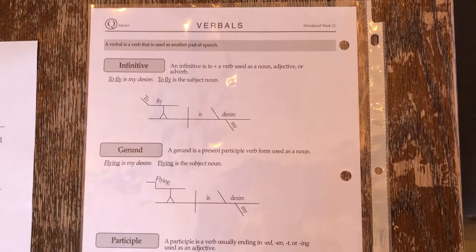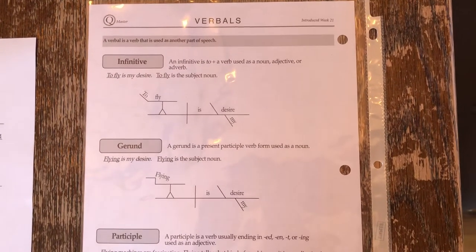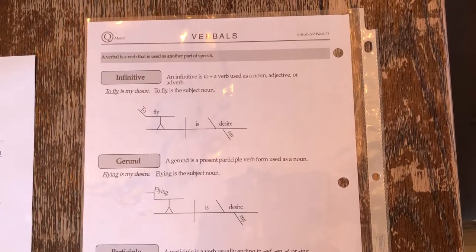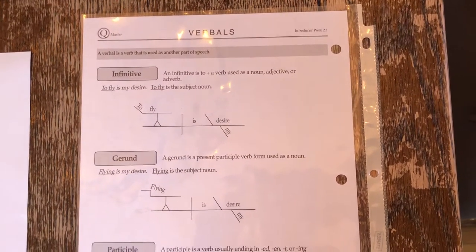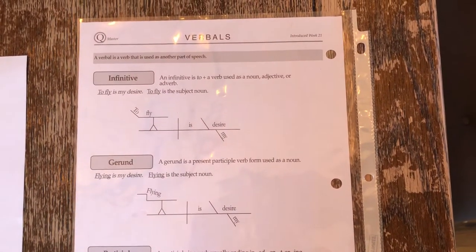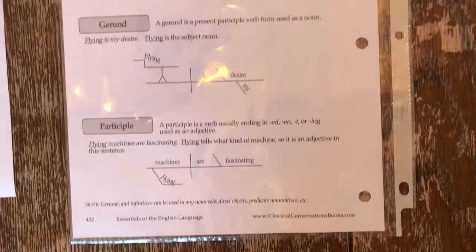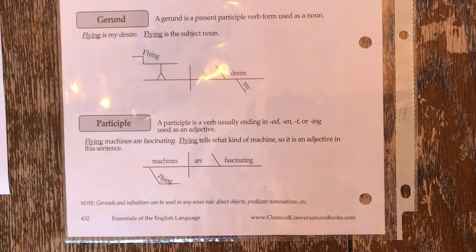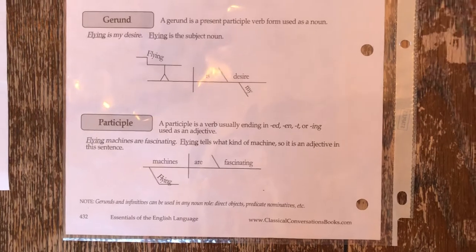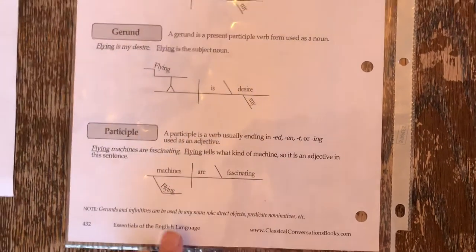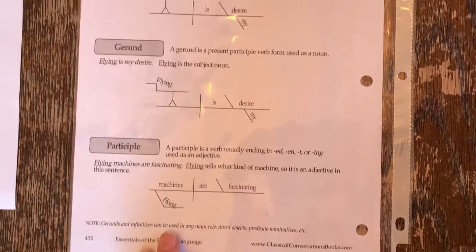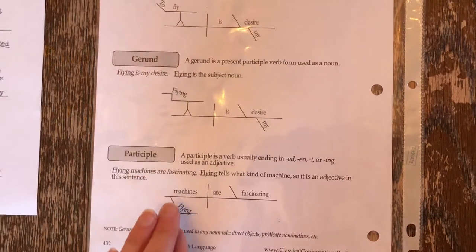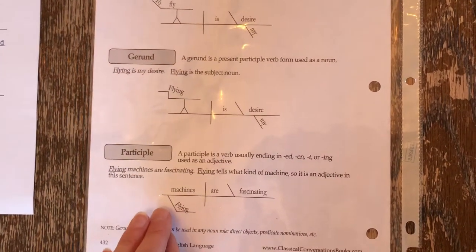We are back at Chart Q looking at the last of our verbals. A verbal is a verb that is used as another part of speech. Our first week we talked about infinitives. Last week, Miss Rachel taught us about participles, and it's important that we learned the participle last week because this week as we focus on gerund, the gerund comes off of a participle.